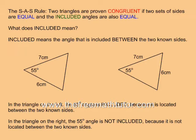In the triangle on the left, the 55 degree angle is included between the 6cm and 7cm sides. But in the triangle on the right, the 55 degree angle is not included between the 7cm and 6cm sides.